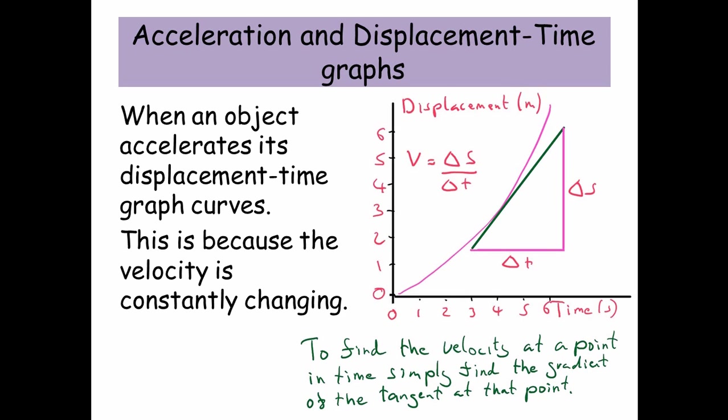To find the velocity at a point in time, you simply find the gradient of the tangent at that point. And it's simply back to delta s over delta t.